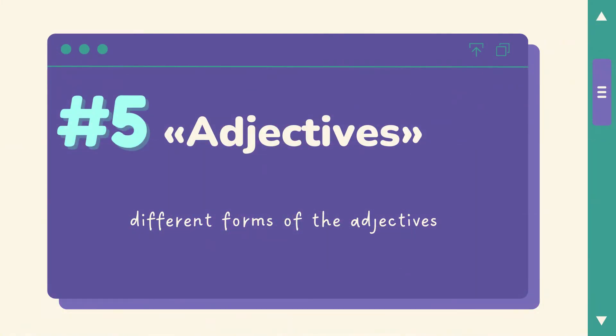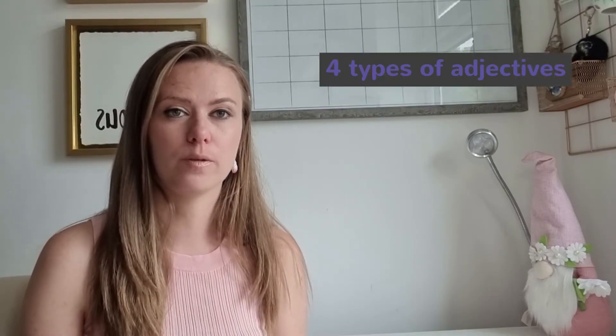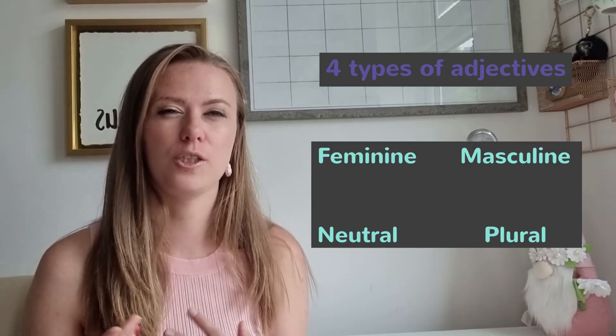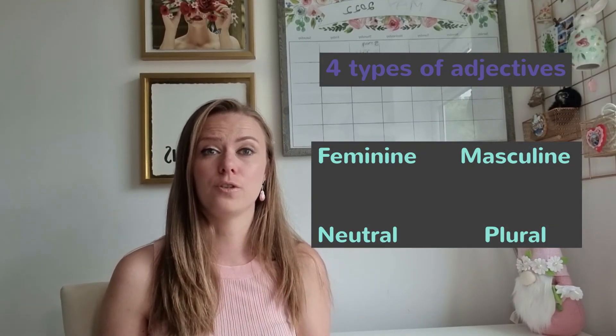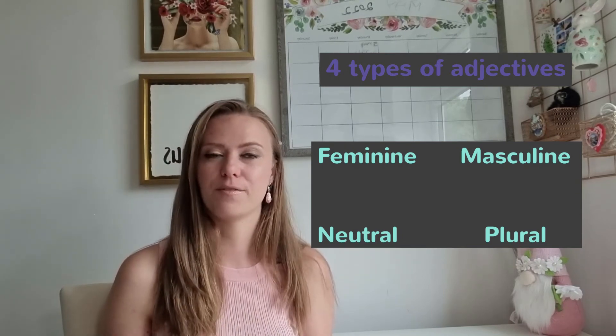Another important grammar category is adjectives. It is very important to know which form of the adjective to use next to a noun, because in Russian there are four different forms: feminine, masculine, neuter, and plural. In English, the adjective 'beautiful' stays the same regardless of the noun — 'beautiful house', 'beautiful woman', 'beautiful seaside', 'beautiful cars' — because English does not have grammatical gender for nouns.